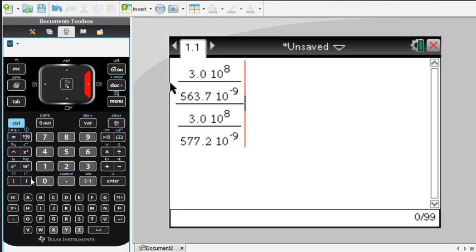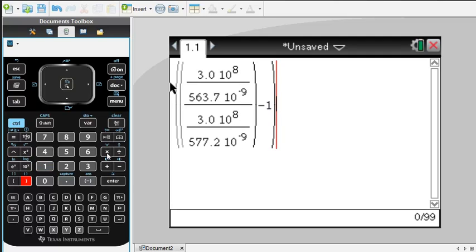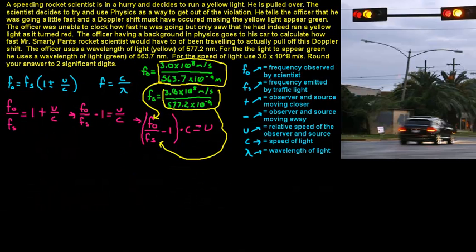And then we are going to put that in parenthesis, and we are going to subtract 1, and we are going to multiply that whole thing by c, or the speed of light. So 3.0 times 10 to the 8th, and we get 7.2 times 10 to the 6th meters per second. Okay.